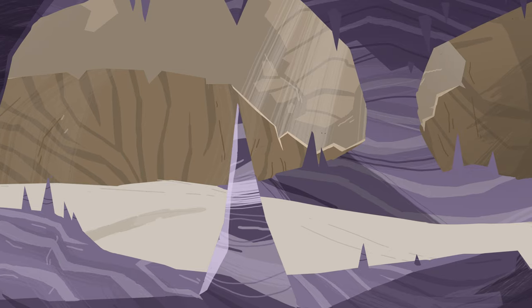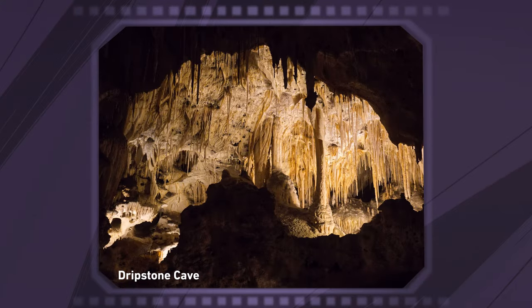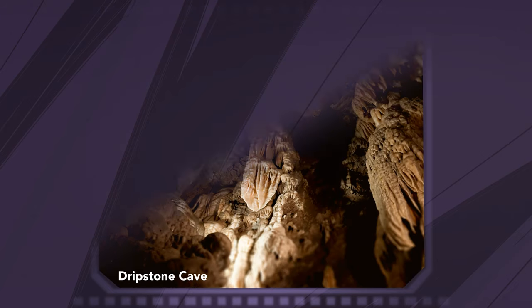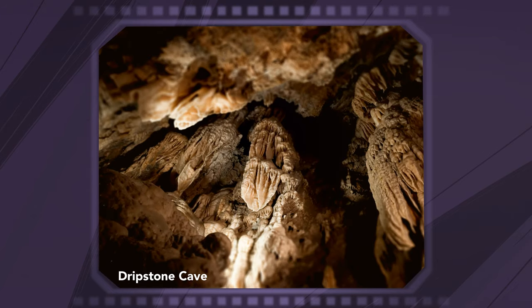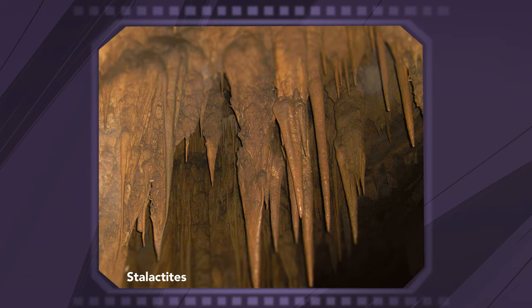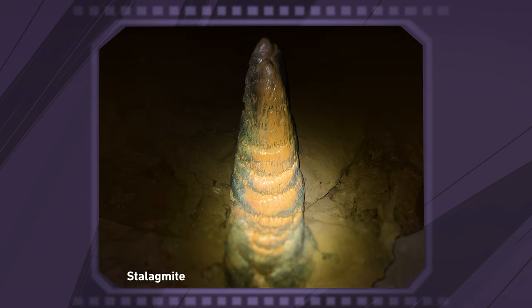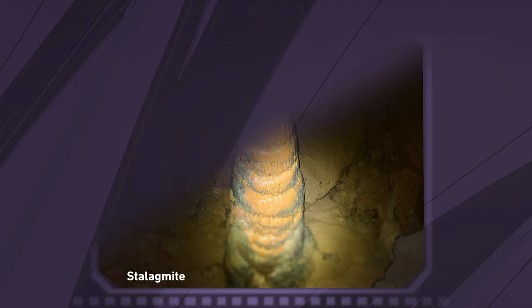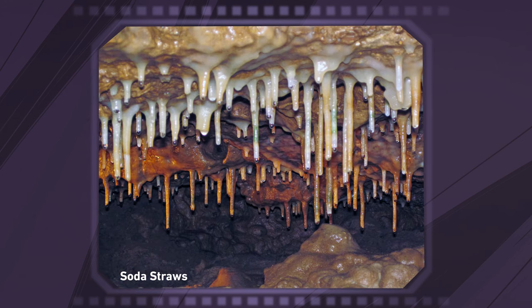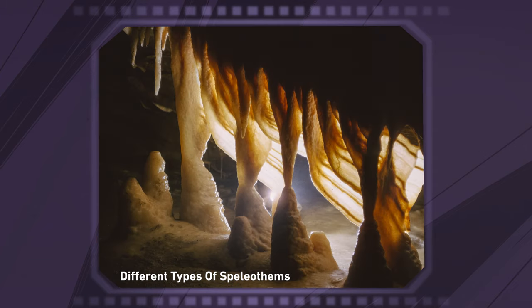How does a stalagmite form? Caves can be decorated with fantastic features, often referred to as dripstones. You might have heard of stalactites, the ones hanging from the top, or stalagmites, the ones growing from the floor. Actually, many other forms can be found in caves. But scientists are mostly interested in stalagmites, because of their well-defined way of growing.